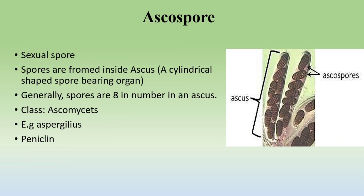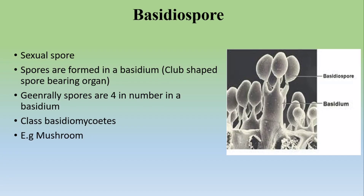The second sexual spore is the ascospore. Ascospores are formed in a cylindrical-shaped structure known as an ascus, and normally there are eight spores per ascus. The class Ascomycetes produces these ascospores. Examples are Aspergillus and Penicillium.